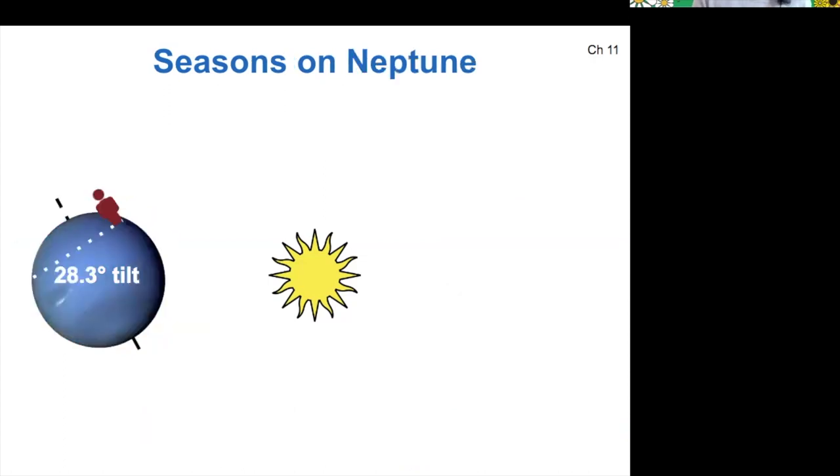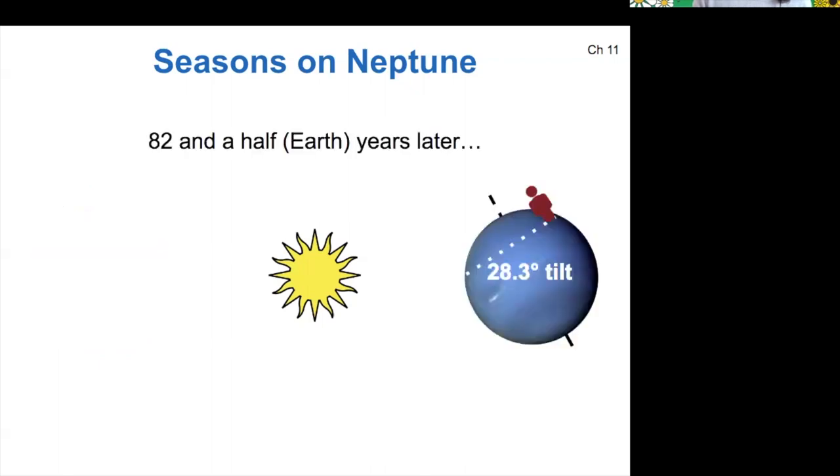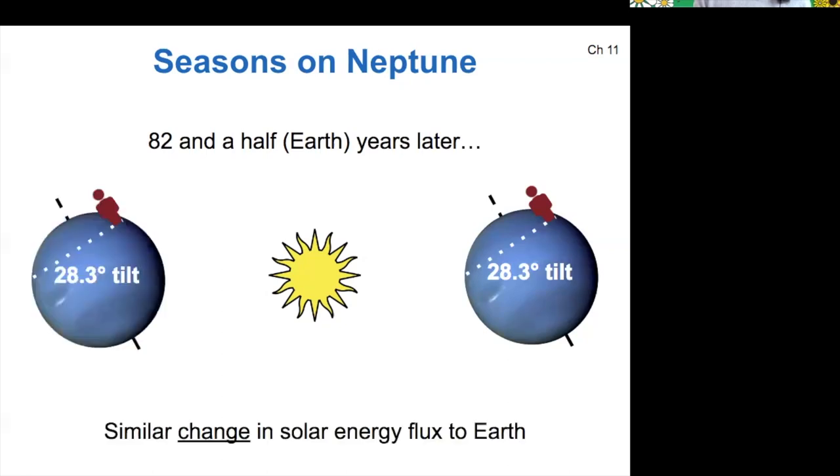And then finally, Neptune kind of is in a similar situation as Saturn, except that it takes a really long time to go from summer to winter here, 82 and a half earth years. But again, it would experience a similar change in solar energy flux, and a lot lower total average flux.